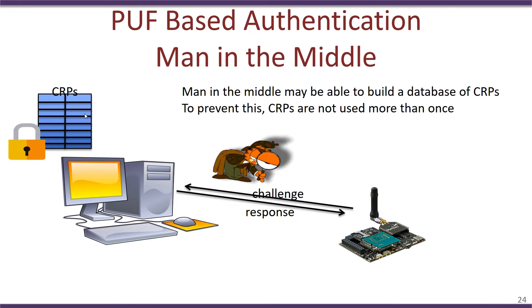One issue with PUF-based authentication is the man-in-the-middle attack. Since the challenge and response are sent in clear text, any man in the middle could view both. If the server sends the same challenge again, the attacker could respond to it without forwarding the challenge to the device. To prevent this, each CRP once used should not be reused — the entry should be marked as deactivated or removed from the CRP database and never used again. This way, man-in-the-middle attacks can be largely prevented.